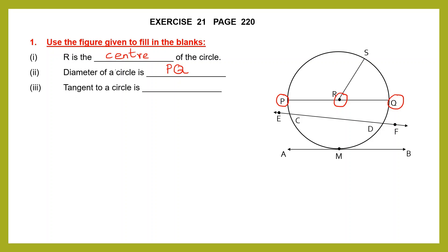Tangent to a circle — what is a tangent? A tangent is a straight line which touches the circle only at one point. You can see line AB here: it is touching the circle only at one point, that is point M. So the tangent of the circle is AB.